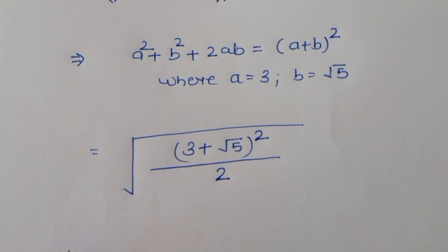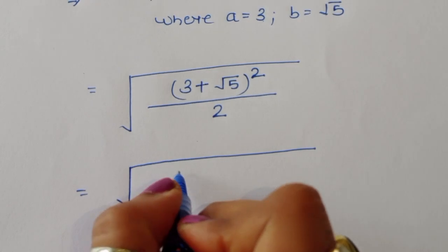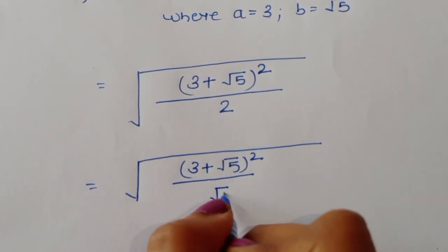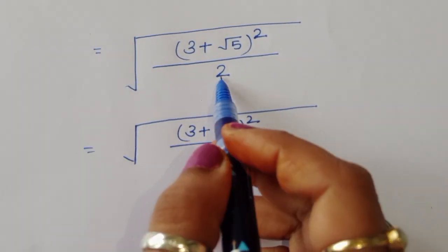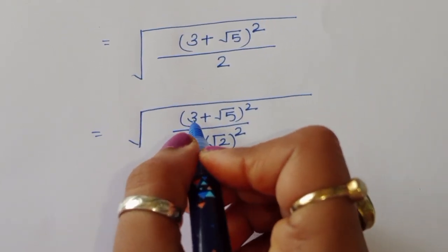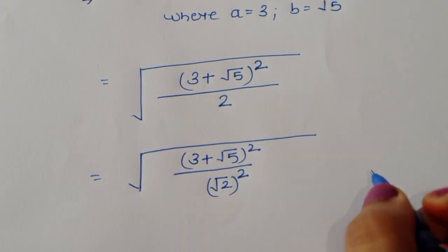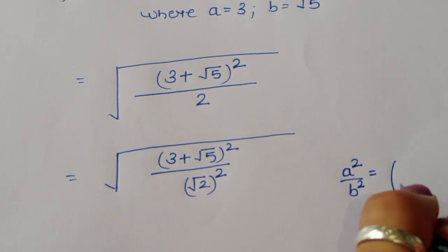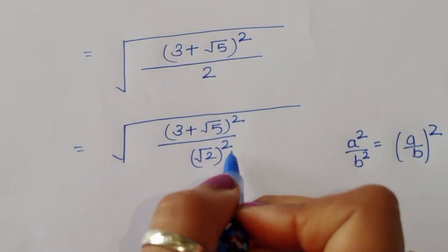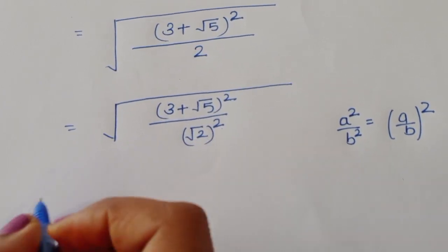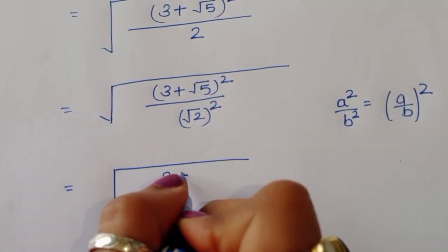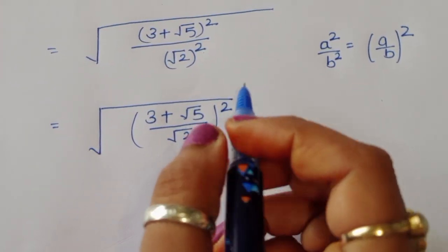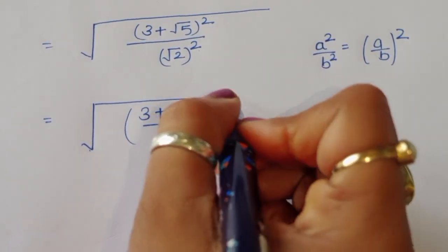We also convert the denominator 2 into square form: 2 equals (square root of 2) squared. So the expression is (3 plus square root of 5) squared divided by (square root of 2) squared. Using the rule a squared over b squared equals (a over b) squared, we can write this as (3 plus square root of 5) divided by square root of 2, all squared. Taking the square root cancels the square, giving us 3 plus square root of 5 divided by square root of 2.